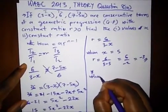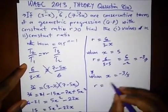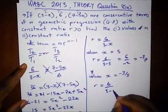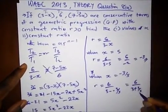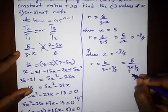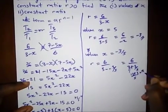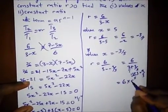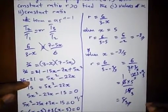When x equals minus 3 over 5, r equals 6 over (3 minus (minus 3 over 5)), which is 6 over (3 plus 3 over 5). Adding over a common denominator of 5: that's 6 over (15 plus 3) over 5, giving 6 over 18 over 5. Bringing 5 up: 6 times 5 over 18, which simplifies to 5 over 3. So the constant ratio is 5 over 3.